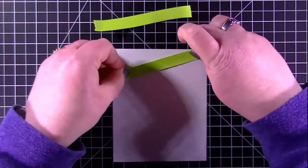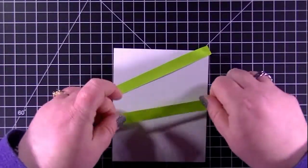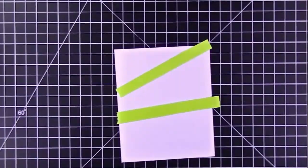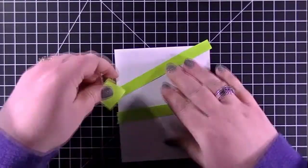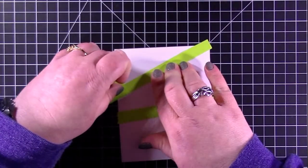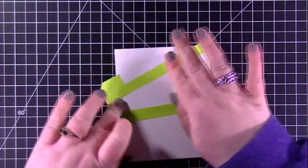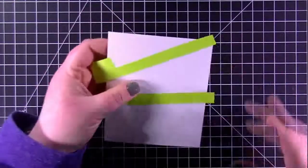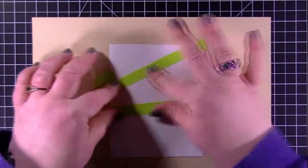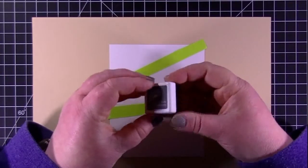This is a piece of Neenah solar white cover crest 80 pound cardstock. I cut it down to four and a quarter by five and a half and I'm just using some post-it tape to mask off an area there. I like post-it tape because I don't tear the paper that's underneath it when I remove it, which is like one of my special superpowers. I watercolor a lot and you would not believe how many pieces of paper I have ruined thinking I can use my painters tape on other paper. Doesn't work.